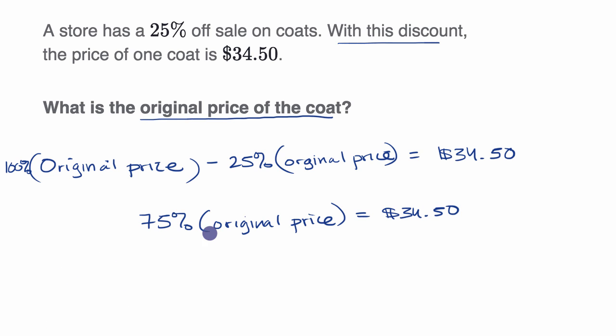And now, to solve for our original price, we just divide both sides by 75%. And 75% is the same thing as 75 per 100, or 75 hundredths. So I could divide both sides by 0.75.